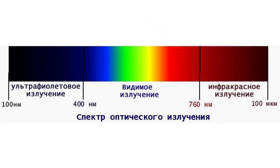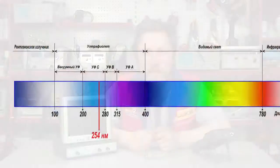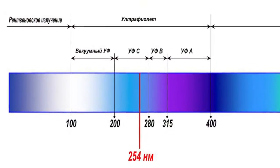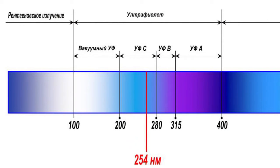The ultraviolet spectrum is divided into three sub-bands: UVA – the long wave band – 315 to 400 nm; UVB – the middle wave band – 280 to 315 nm; and UVC – the short wave band – 100 to 280 nm.